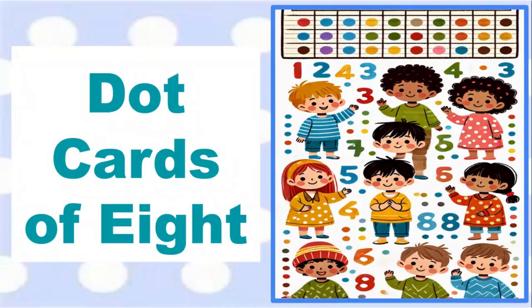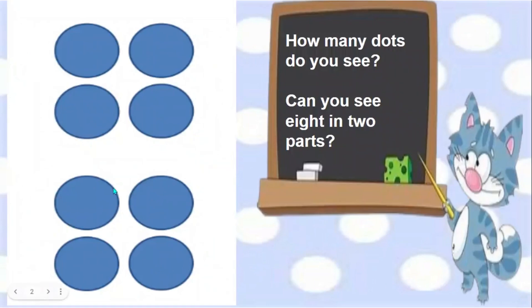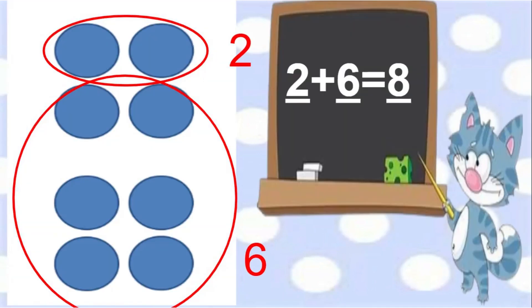This fluency is called Dot Cards of Eight. Take a look at my dot card. How many dots do you see? Can you see it in two parts? I saw two and six dots. Two and six is eight.